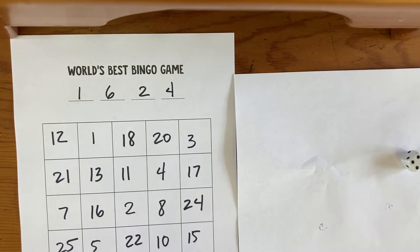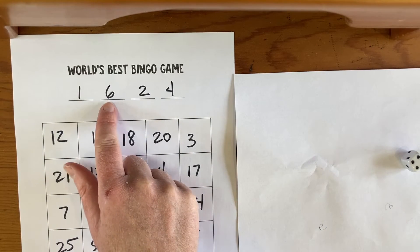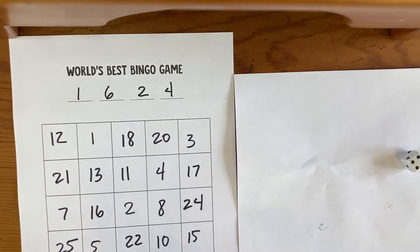So what happens? Let's just add them together and see what we get. 1 plus 6 is 7, plus 2 is 9, plus 4 is 13. So we can cross off the 13.